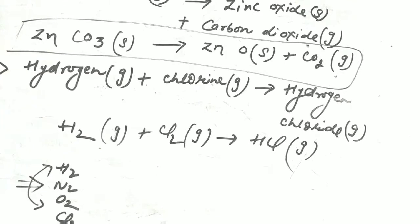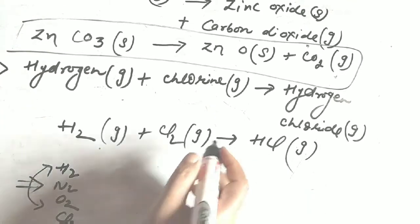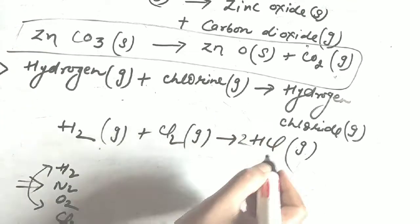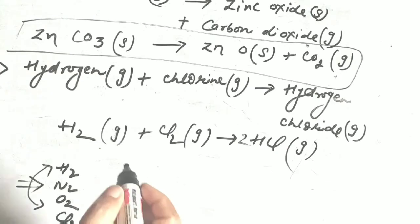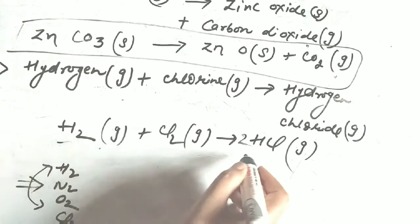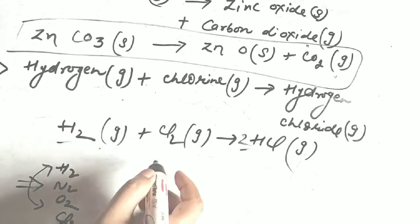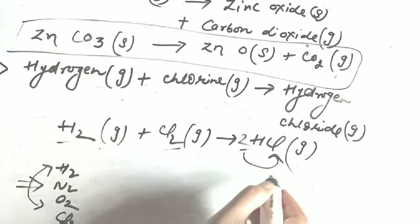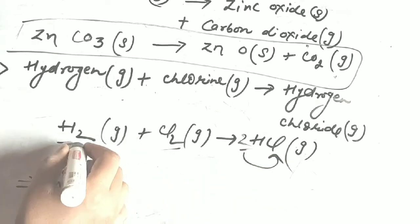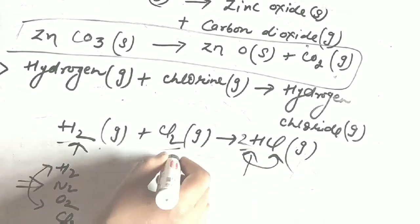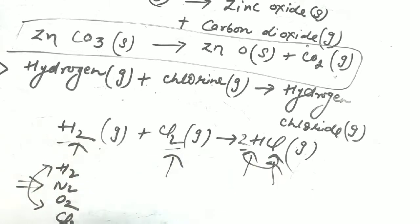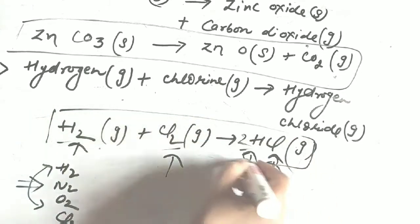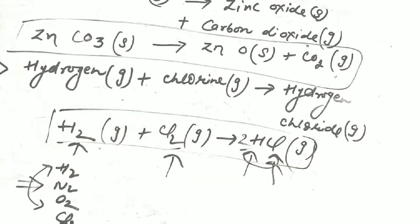Balancing: H₂ plus Cl₂ gives HCl. H₂ gives 2 H, Cl₂ gives 2 Cl, so we need 2 HCl on the product side. The balanced equation is: H₂ (g) + Cl₂ (g) → 2HCl (g).